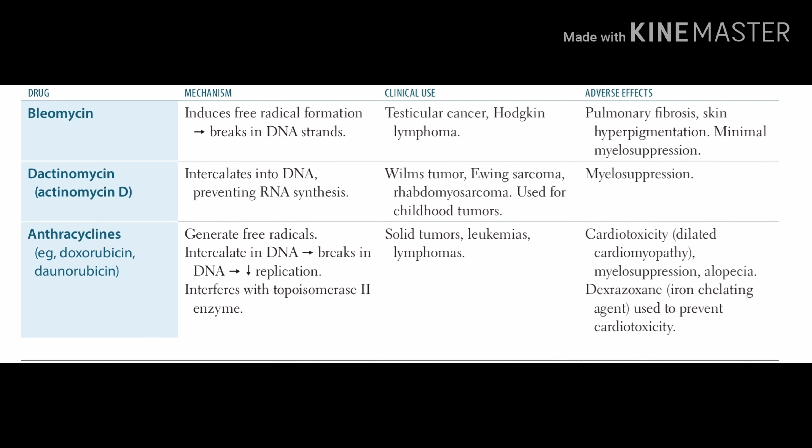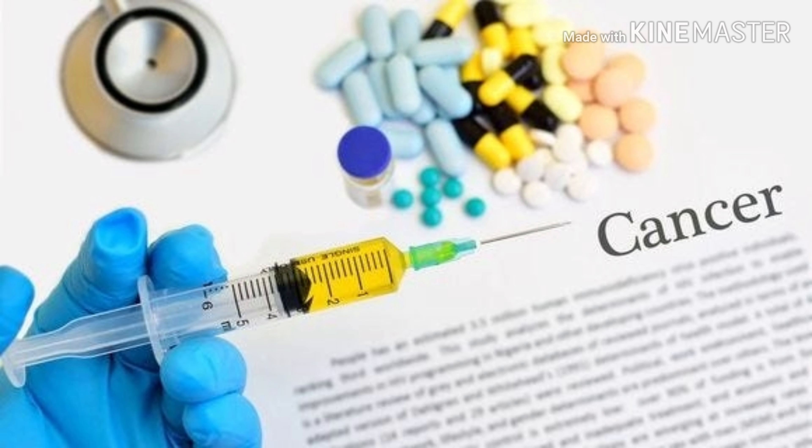In the textbook: doxorubicin and daunorubicin generate free radicals and intercalate into DNA, are used in leukemia and lymphoma, and adverse effects include cardiotoxicity (dilated cardiomyopathy), alopecia, and myelosuppression, which is common to almost all anti-cancer drugs. Dexrazoxane, an iron-chelating agent, is used to prevent cardiotoxicity — remember the razor placed on the 'dex.'